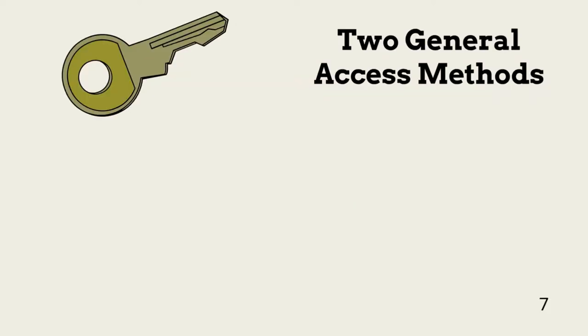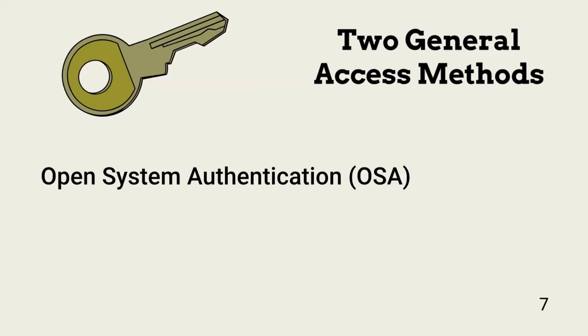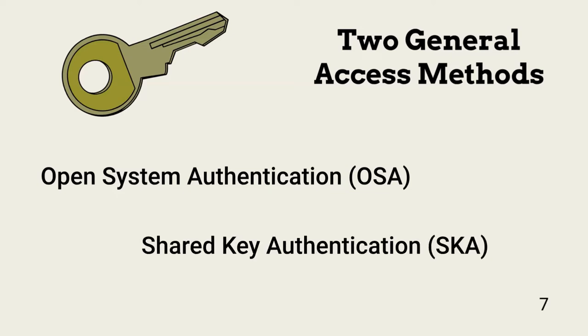In general, an entity can directly connect to a wireless network in one of two ways. The first is Open System Authentication, or OSA. With OSA configured, an entity just has to be within range of the wireless signal to connect — no other authentication is needed. With the second, Shared Key Authentication or SKA, the wireless network is configured to require a shared key or other type of authentication in which the entity must present proof of identity.